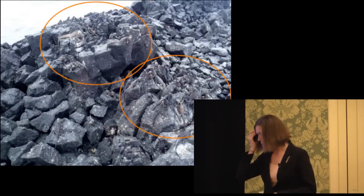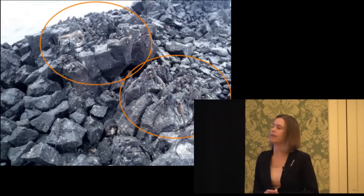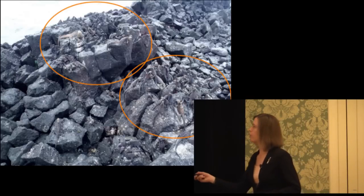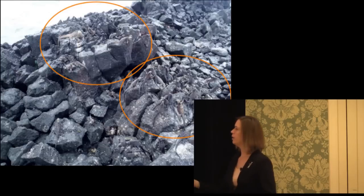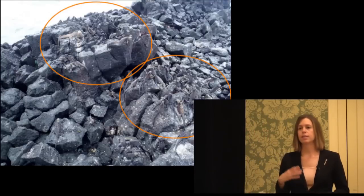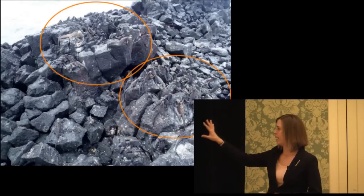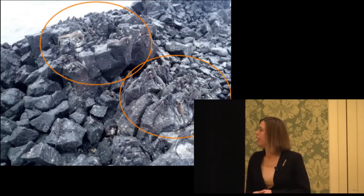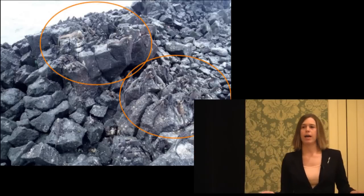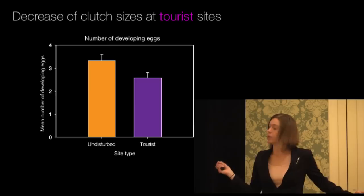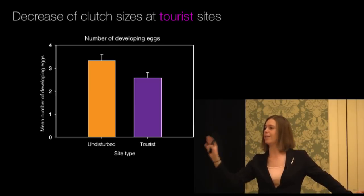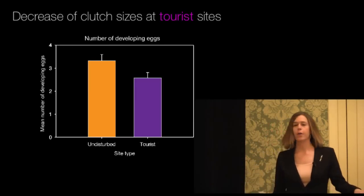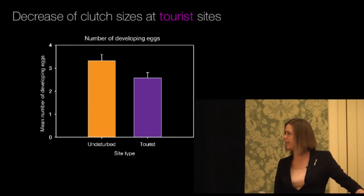We measured reproduction clutch sizes in females across these different sites. And we found consistently reduced clutch sizes at these tourist sites relative to the undisturbed sites, suggesting that there could be effects on population size in the long run. Now, there's a little anecdote that the locals have told me — this is not scientific fact, I have no data other than personal observations to back this up, but it's a really cool idea.